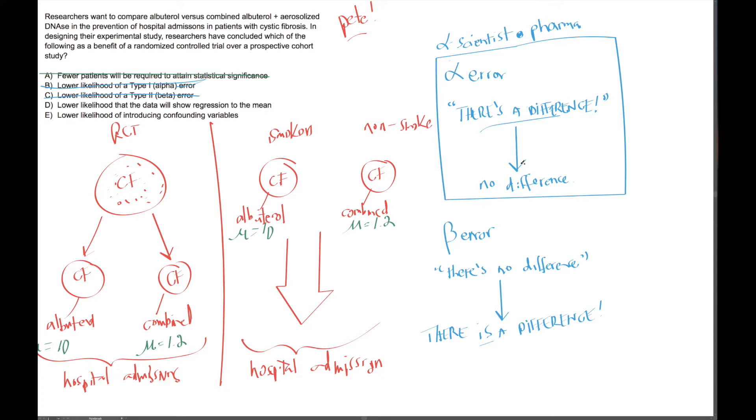And again, that is the most common error. Scientists want to say, hey, there's a difference, but in reality, there's no difference. We should not have rejected the null hypothesis, but we did.